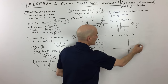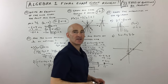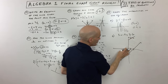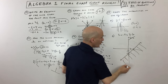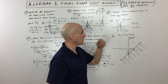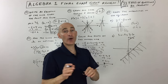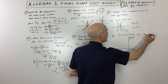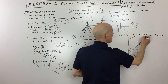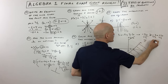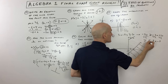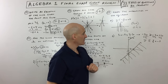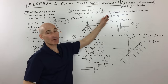If you rearrange that second inequality by subtracting 3x and dividing by negative 2 — remember, dividing by a negative flips the inequality sign — you get y less than or equal to the expression. This confirms you shade below the solid line. That's question type 15.